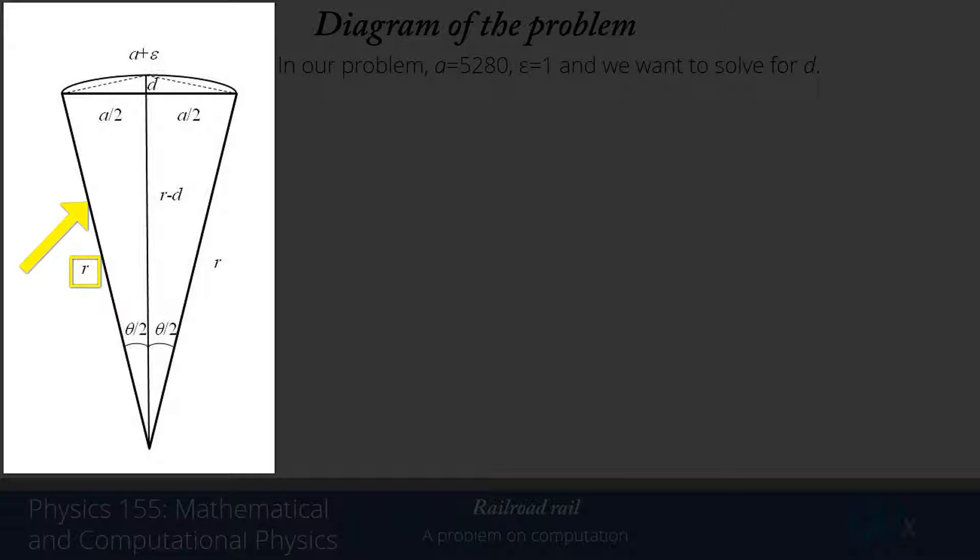We have a radius here and the radius is drawn pretty close to scale. If anything, the radius is a little smaller than the true radius is. We define the angle theta over 2 to be half of the angle for the full arc that is subtended here over the full stretch of the railroad.